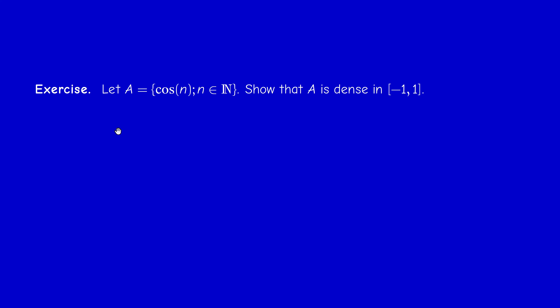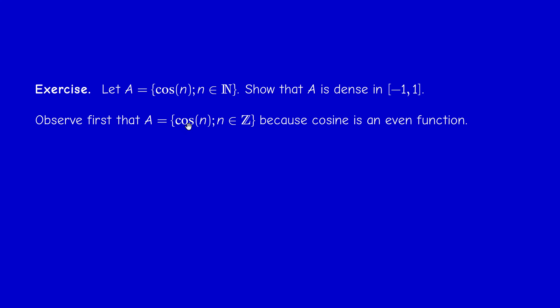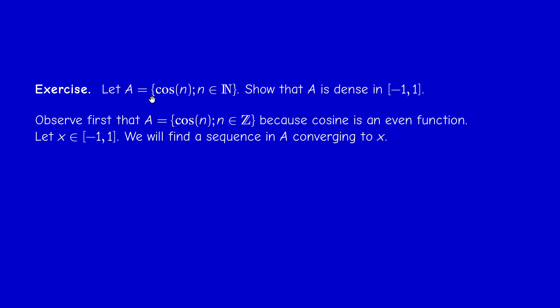We can solve an exercise from the book: we have to prove that the set A of elements of the form cos(n) when n is an integer is dense in [-1, 1]. First, observe that we can replace N by Z because cosine is even. So we can write it as the union over positive and negative integers — it doesn't matter. The strategy is Proposition 1.6: prove that any element in [-1, 1] is the limit of a sequence in A.